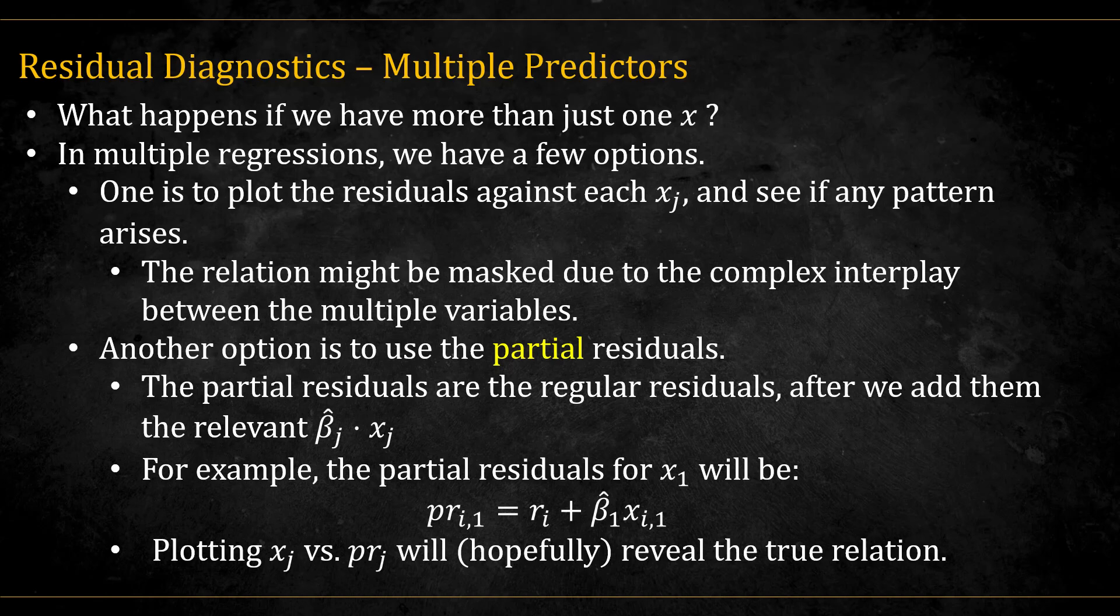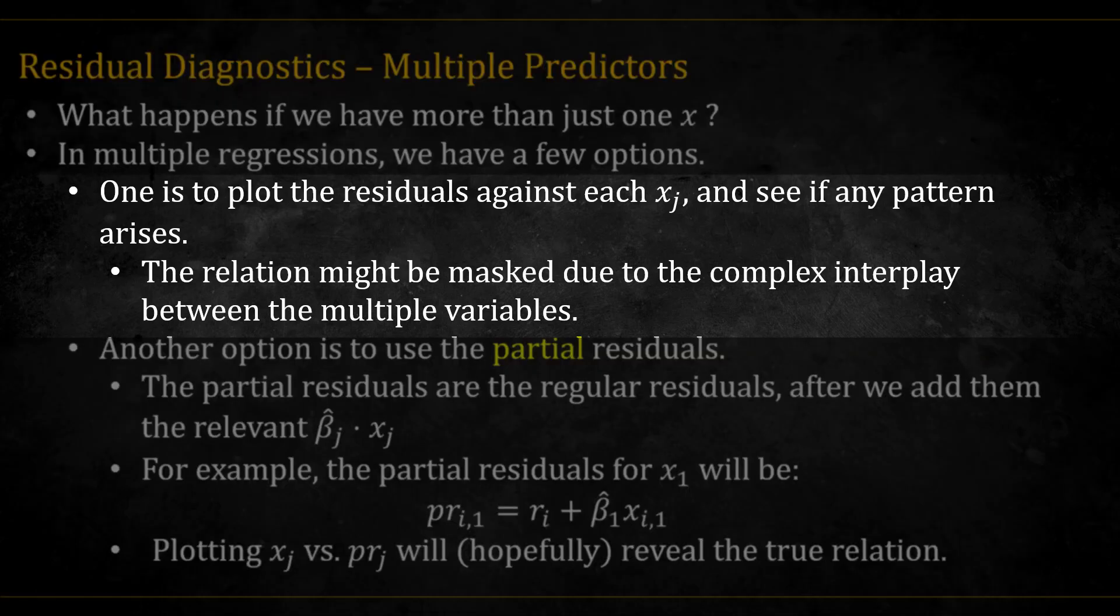But what happens if we have multiple x's? There are a few options. One is to plot the residuals against each different x and look for a pattern. This could work, but one problem is that the true relation between x and y might be masked due to the complex interplay of the different variables.